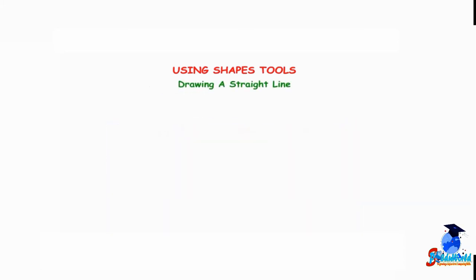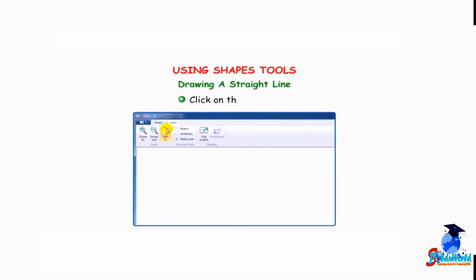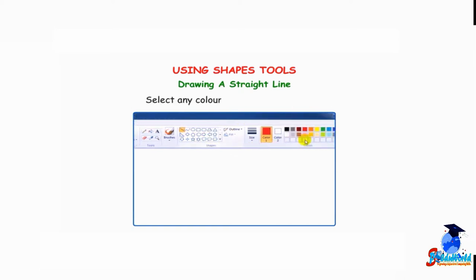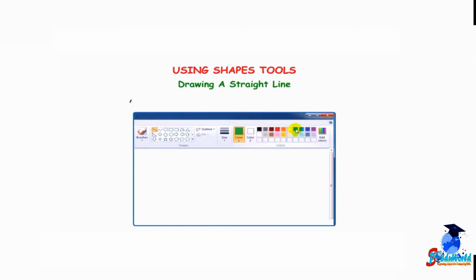Drawing a straight line: Click on the Home tab. Select the line tool in the Shapes group. Select any color from the Colors group and the line thickness from the Size button.